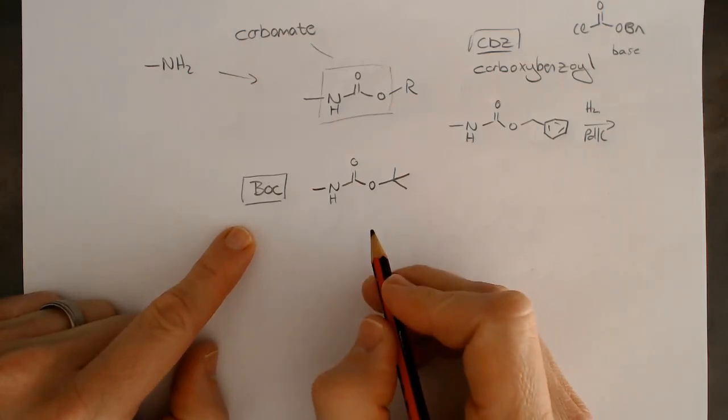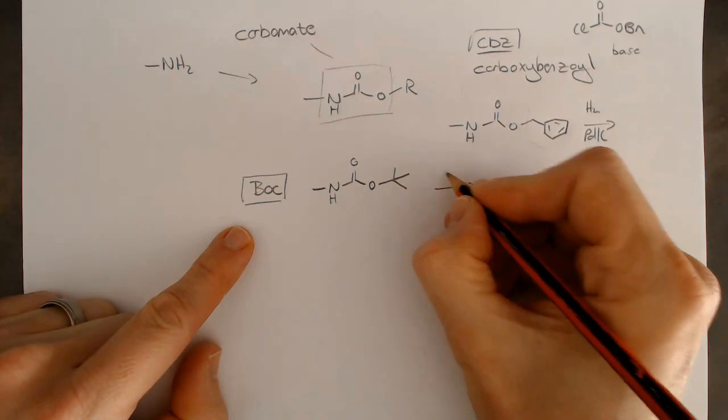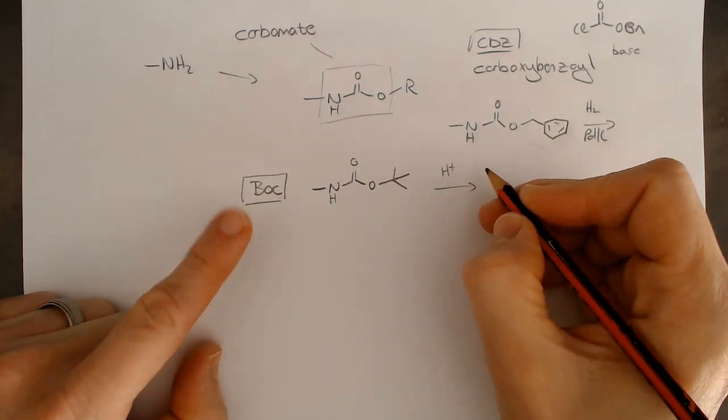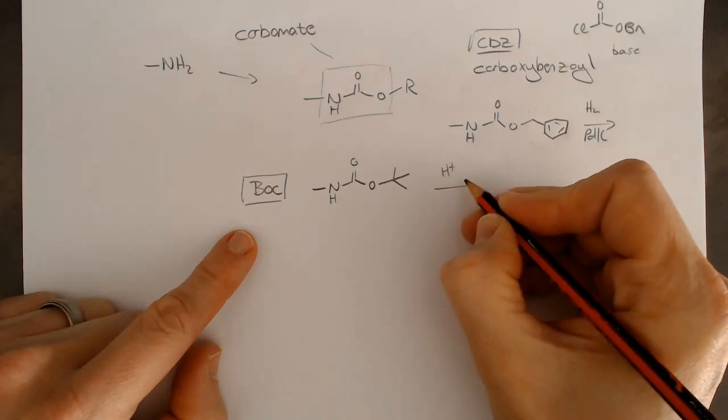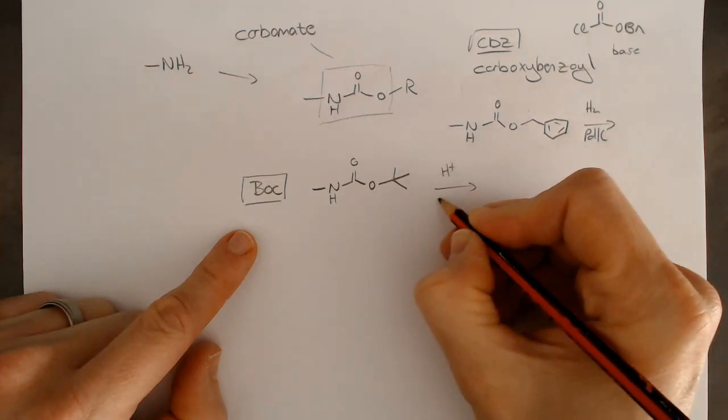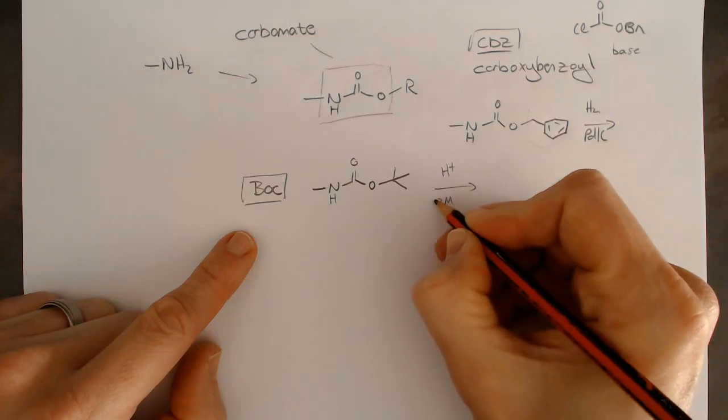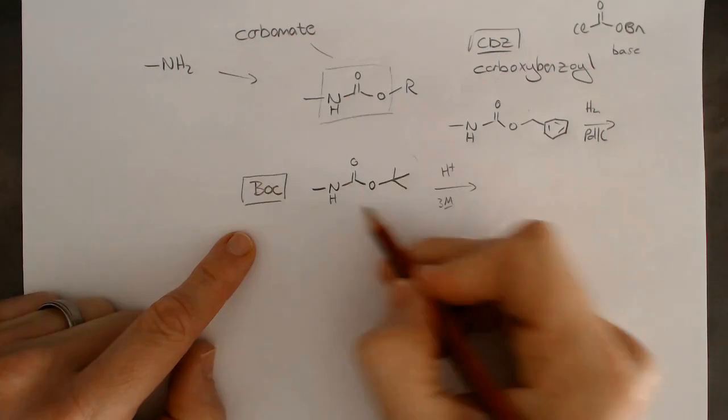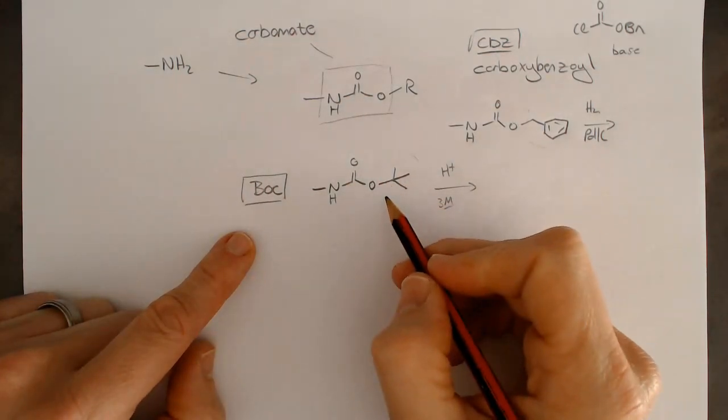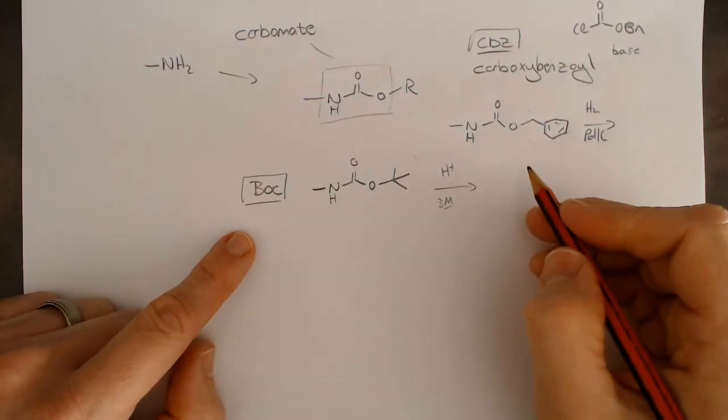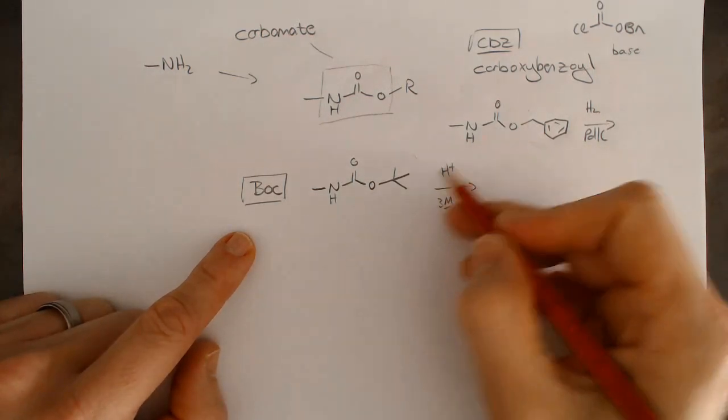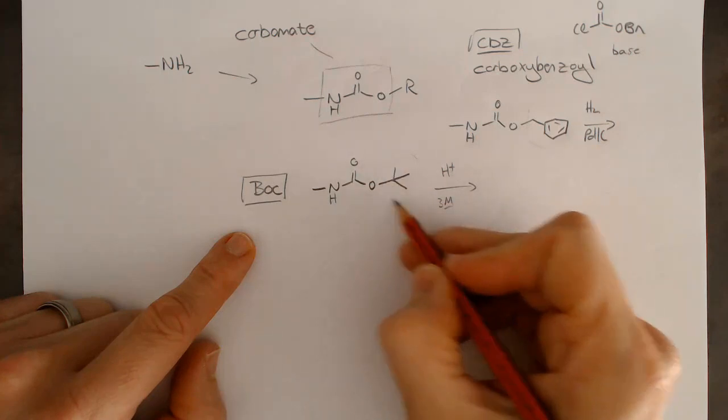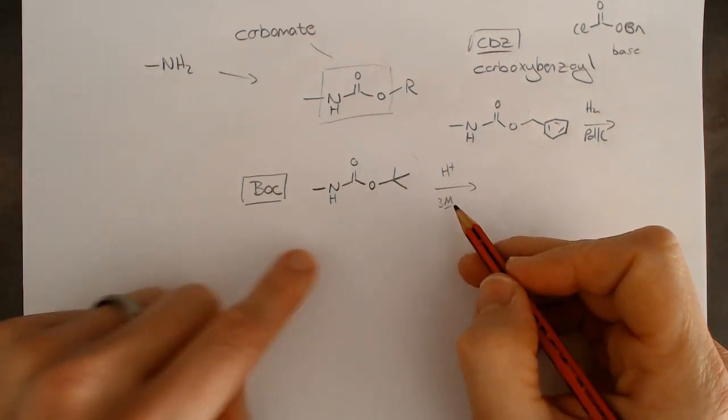The BOC group, if we want to remove it, we just need acid, relatively mild acid. 3 molar is normally okay, 3 molar HCl for instance would remove this. But there are other acids that people use as well, like trifluoroacetic acid. There's a whole bunch of different versions. Tertiary butyl groups are very susceptible to acid hydrolysis.